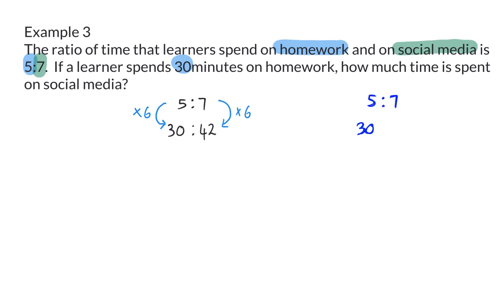A different approach here would be to ask yourself 30 divided by 5 will give me what? That will be 6 and that means that if I work in the opposite direction I will have to multiply by 6. Therefore we can say that 42 minutes will be spent on social media.